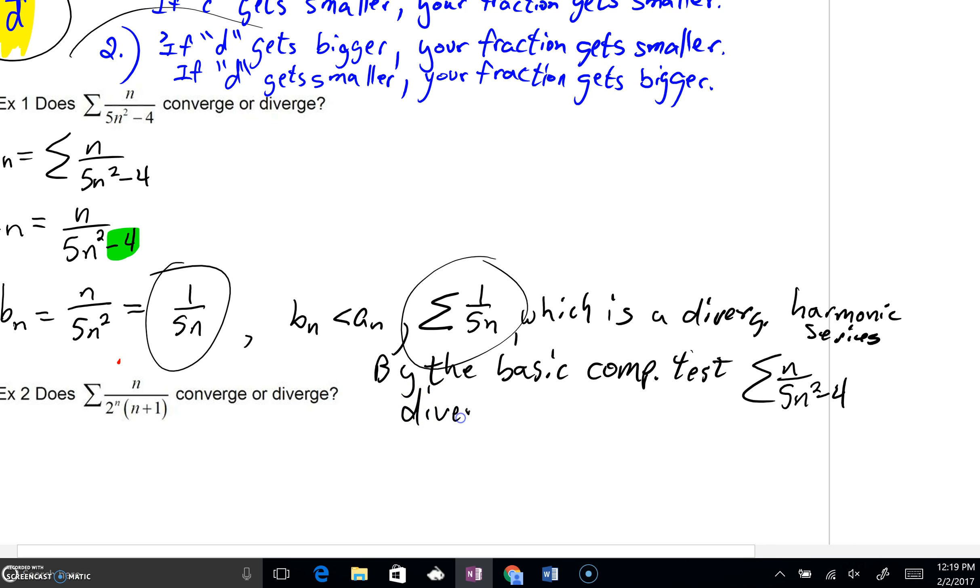Please understand, when you're doing these problems, this is really like a proof. We're going to have to go through the significant steps of showing your new series, always making a statement that the series would be larger or smaller than the original. Then you can use the basic comparison test as the reason why you can say that your series will converge or diverge.